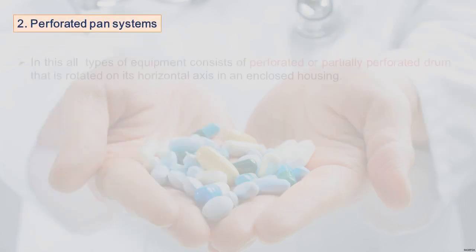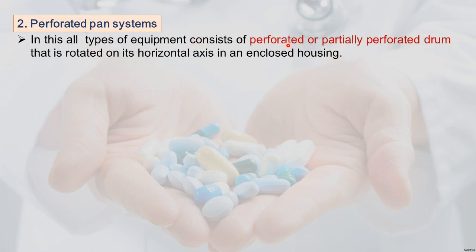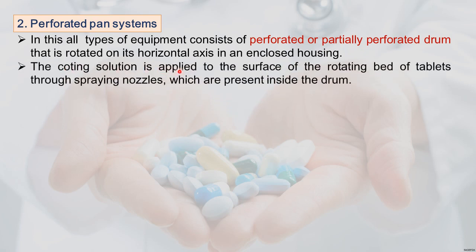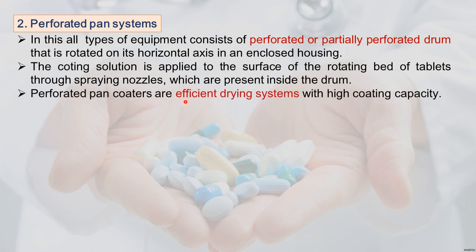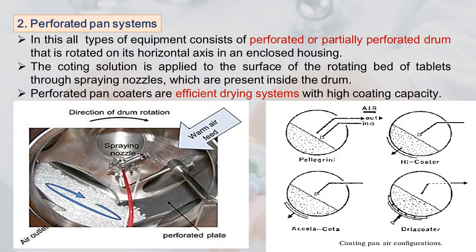In perforated pan systems, all equipment consists of perforated or partially perforated drums rotated on a horizontal axis in an enclosed housing. Unlike standard coating pans, these are not tilted and have an enclosed housing with perforated drum plates. Coating solution is applied through spray nozzles inside the drum. Perforated pan coaters are efficient drying systems with high coating capacity.